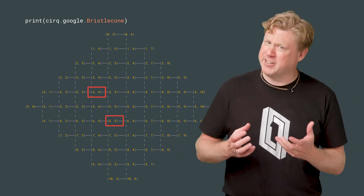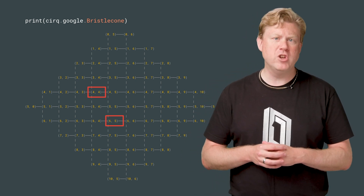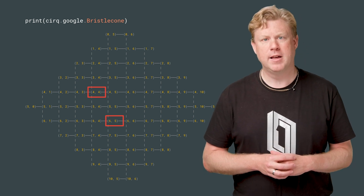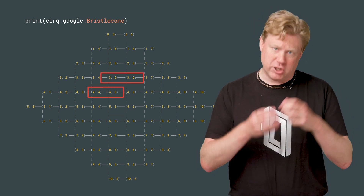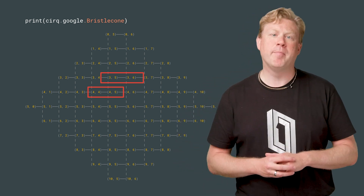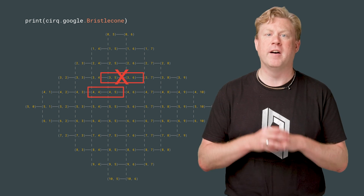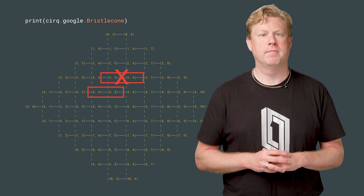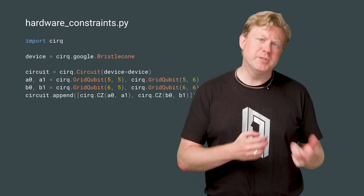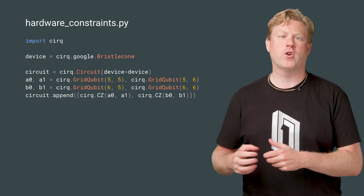Another subtlety of the Bristlecone device is that there are important constraints on when you can simultaneously perform two-qubit gates. If you apply a two-qubit gate to two adjacent qubits, then you cannot simultaneously apply a two-qubit gate to any of the adjacent qubits of this two-qubit gate. Because the hardware isn't abstracted away in CIRQ, we can use the device objects directly when building our quantum program to enforce these constraints.